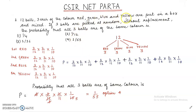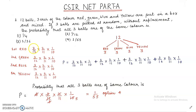We have 12 balls: 3 each of red, green, blue and yellow. If we pick 3 balls at random without replacement and want all three to be the same color, we solve using conditional probability. For the red condition: the first ball red is 3/12, after picking one red ball, 2 red remain out of 11 total — so 2/11. Then 1 red remains out of 10 total — so 1/10.